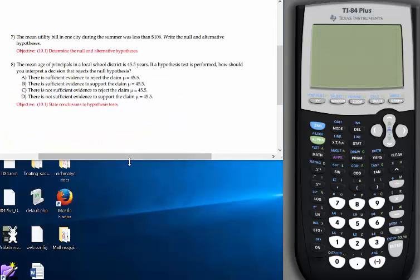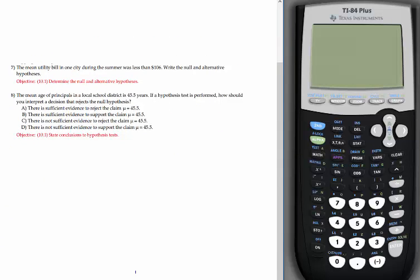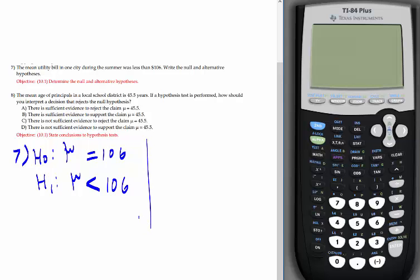Number seven. The mean utility bill in one city during the summer was less than 106. Write the null and alternative hypothesis. The mean is mu, less than 106 for the alternative, and equal to 106 for the null.